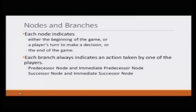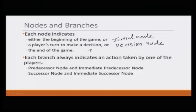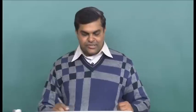A node represents one of three things: the beginning of the game (initial node), a player's turn to make a decision (decision node), or the end of the game (terminal node). Nature can also start the game — for example, deciding whether it will be sunny or rainy before the strategic interaction begins. So either a player or nature can start the strategic interaction.